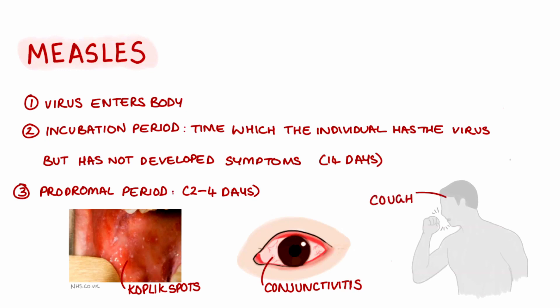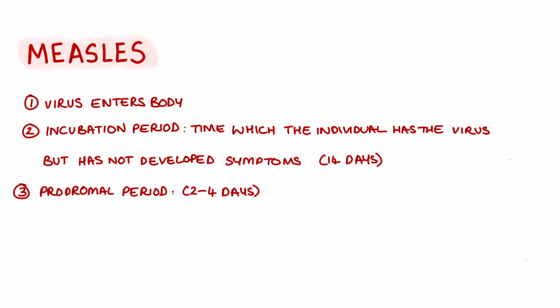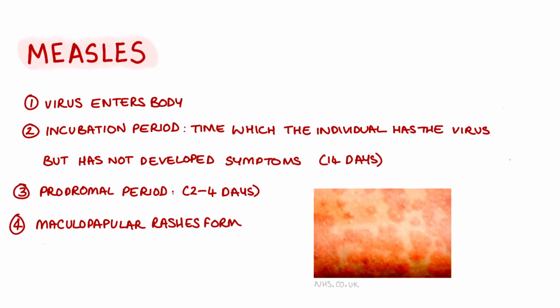After these initial symptoms, Koplik spots start to appear. These are small white spots that occur on the mucous membranes, for example inside of the mouth. Following on from the prodromal phase, the individual will then start to have characteristic rashes on their skin. As you can see, these are small red spots where some are raised and some are flattened.